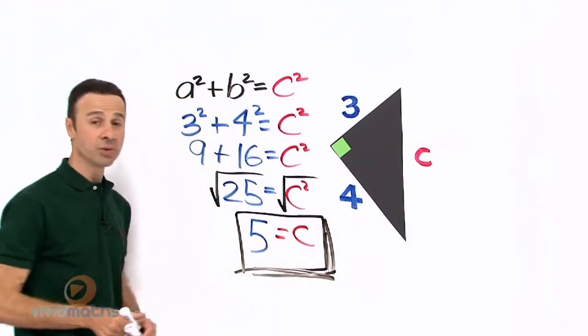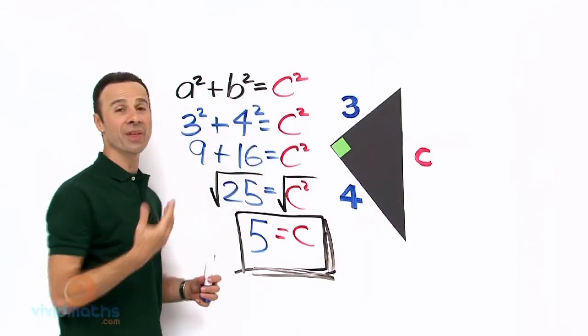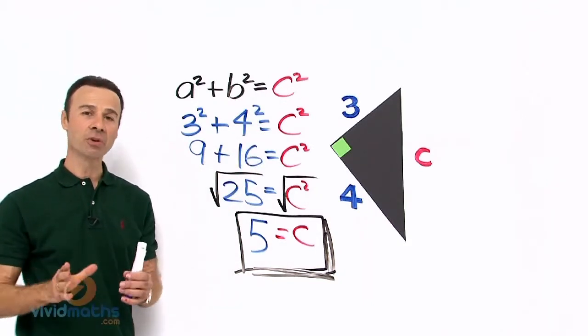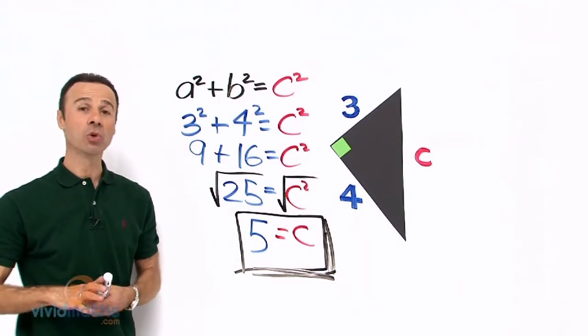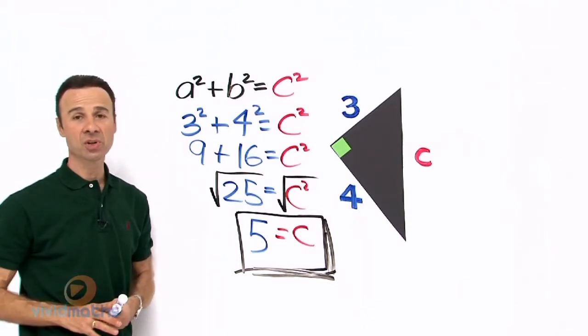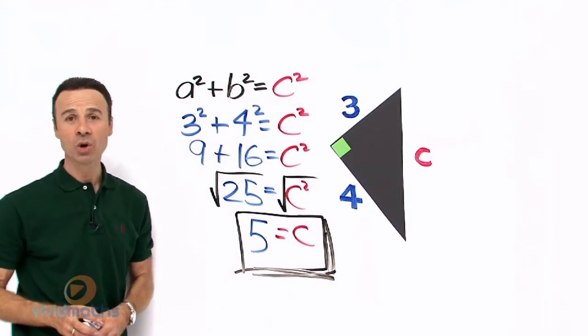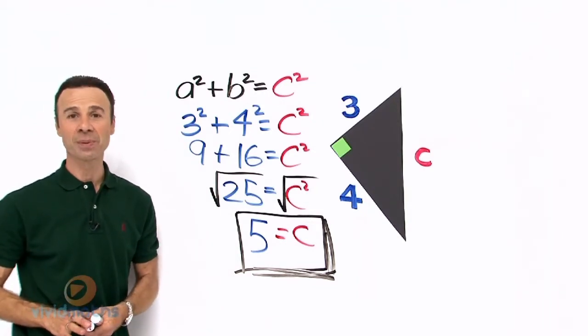Now stay tuned if you don't understand the square numbers, where they come from and why they are like that. I am going to show you how the Pythagorean theorem proof actually looks in pictures. So stay tuned, I am about to show you a picture format.